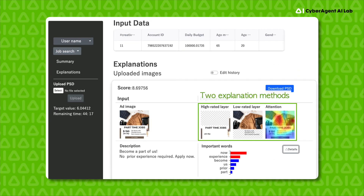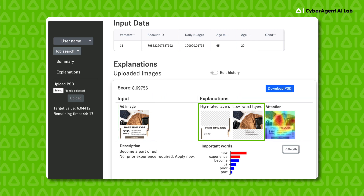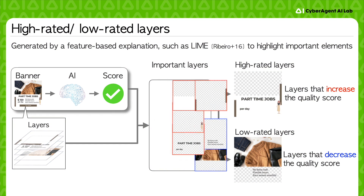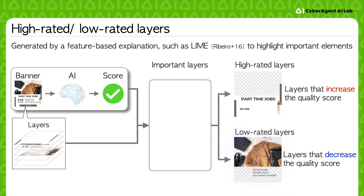Our system utilized two explanation methods, each producing a visual explanation displayed right next to the banner to be explained. The first is high-rated and low-rated layers. These are generated by a feature-based explanation such as LIME, which highlights important elements — indicating layers which could increase or decrease the quality score.